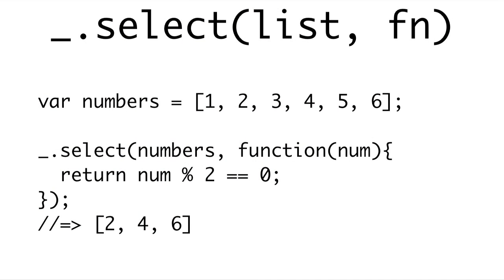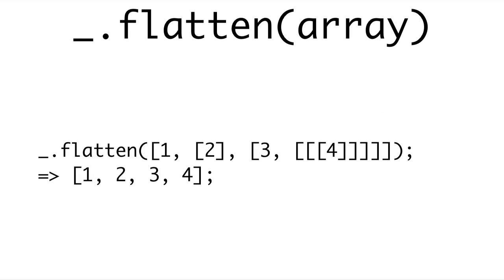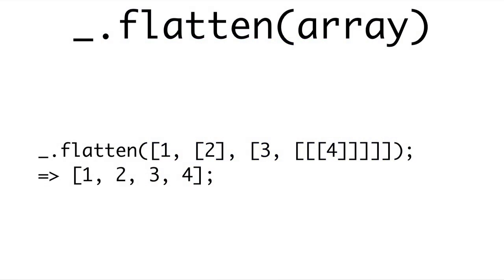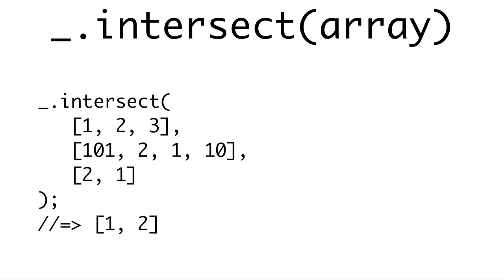There are other cool methods. Select takes a list and a test function — if the test returns true, that value is included in the output. Here we select all even numbers by testing if the mod of two equals zero; bringing in one, two, three, four, five, six, the result is two, four, and six. The flatten method takes an array with nested arrays and flattens them down into a single array — for instance, one, [two], and [three, four] becomes one, two, three, four. The intersect method takes any number of arrays and returns only the elements that existed in all of them — so intersecting three arrays returns only the values shared by all three inputs, like one and two.